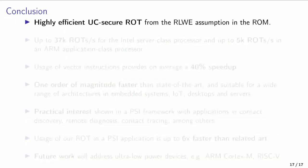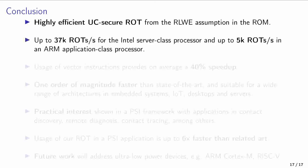To conclude, we have developed a novel random oblivious transfer protocol, whose security is based on the RLWE assumption, and that is proved UC-secure in the ROM, a crucial factor for protocols that are meant to be used while composed with other protocols. We achieve speeds up to 37,000 random OTs per second for an Intel x86 server-class processor, and up to 5,000 random OTs per second in ARM application-class processors suitable for constituting part in a system on a chip.